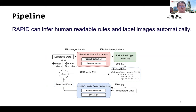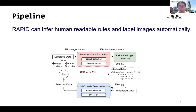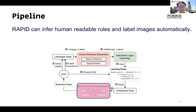RAPID has three blocks. The visual attribute extraction part can leverage pre-trained computer vision models to extract attributes and labels from images. Then, the inductive logic learning block can infer labeling rules via attributes and labels. At last, the multi-criteria active learning strategy can iteratively solicit more human labels and thus improve the performance of our tool.